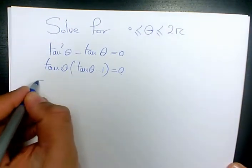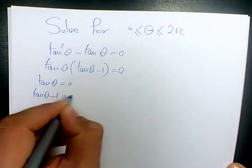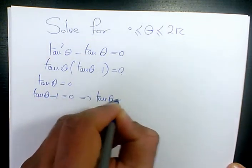Then we can say tan theta equals to zero or tan theta minus one equals to zero, so tan theta equals to one.